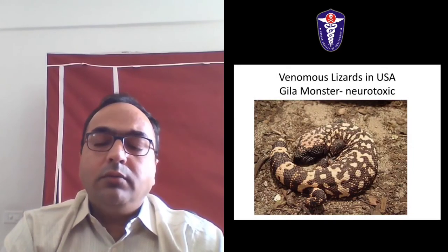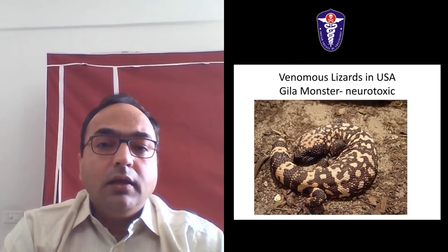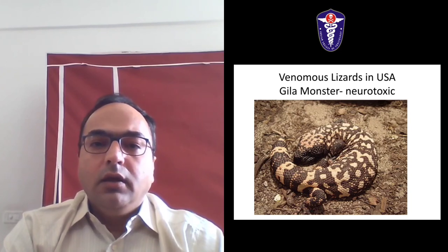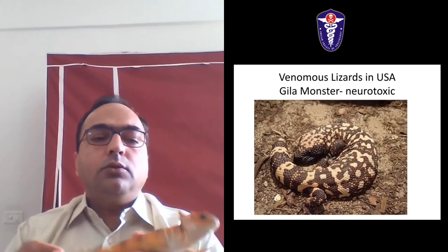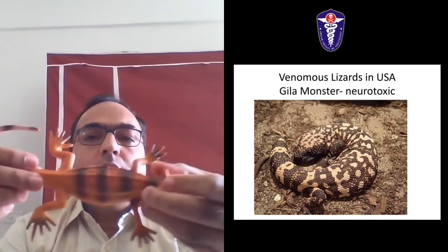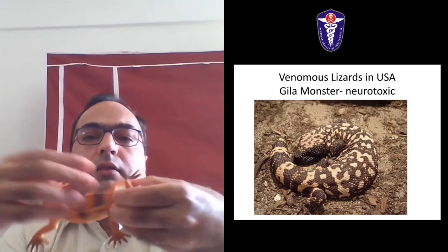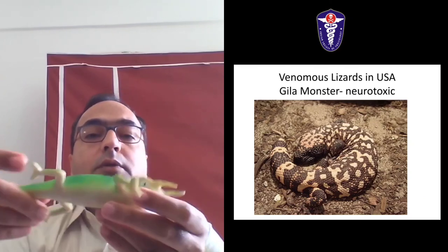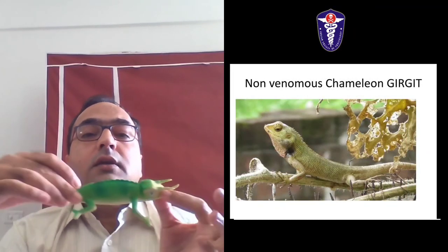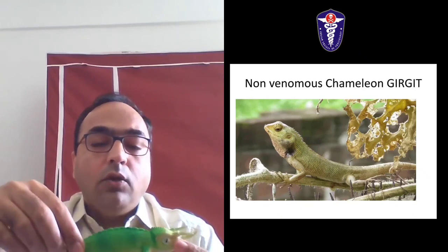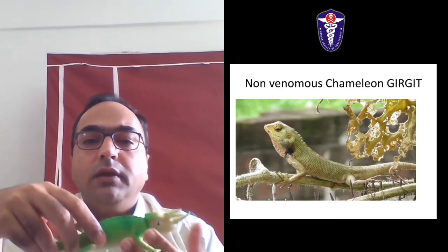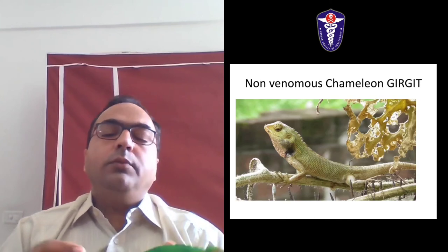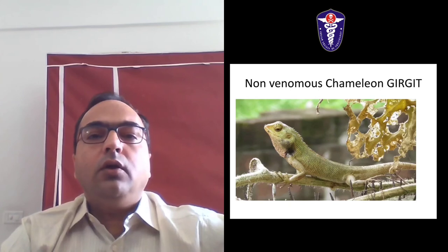Coming to venomous lizards: the only venomous lizards are the gila monster, which is neurotoxic. They curl just like a snake and can bite similarly, but they are very dull and do not move much. The chameleon - girgit - also comes in the rainy season but is non-venomous. It changes colors from blue to green to red for camouflaging itself from predators. We should not be afraid of a chameleon bite.